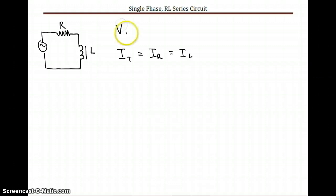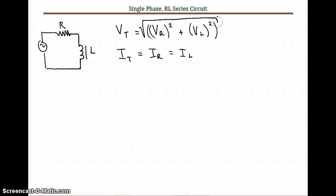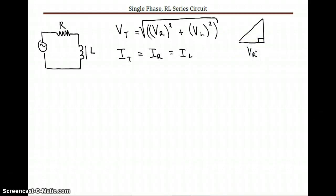Since current is the same, the voltage behaves differently in this circuit. We'll use Pythagoras' theorem to find the total voltage, because the resistive and inductive voltages do not happen at the same time — they're 90 degrees out of phase. So: VT = √(VR² + VL²). On the right-angle triangle, the resistive voltage is the adjacent, the inductive voltage is the opposite, and the total voltage is the hypotenuse.